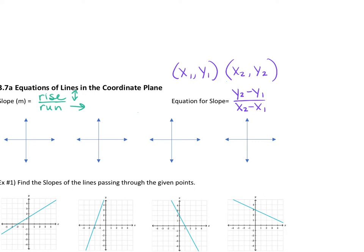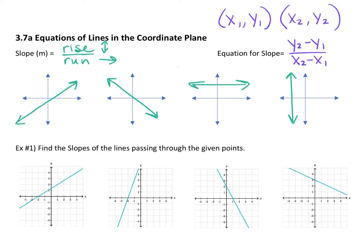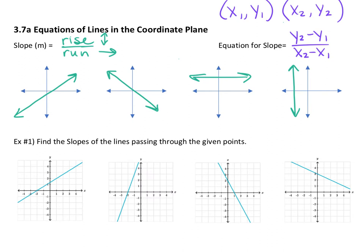I want to talk about what some slopes look like. I'm going to draw you four pictures — draw them with me — and then we'll talk about what they look like. So let's say one of them goes like this. It doesn't matter where you put it; it matters the angle. Just make it look something like mine and you'll be good. Draw those four lines. So we're going to talk about what we know about those slopes.